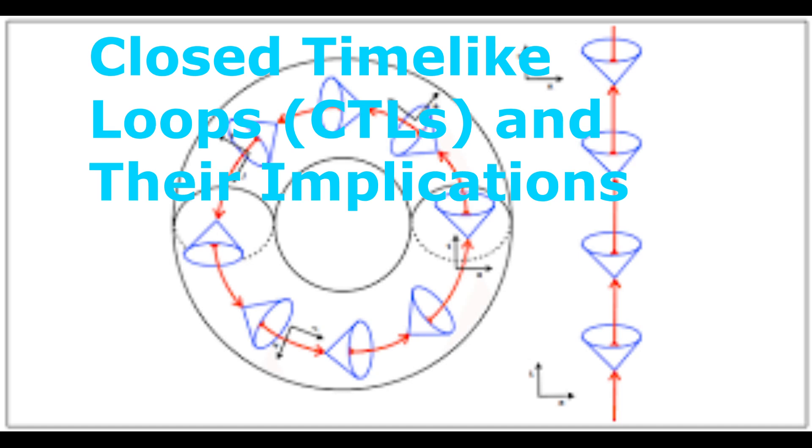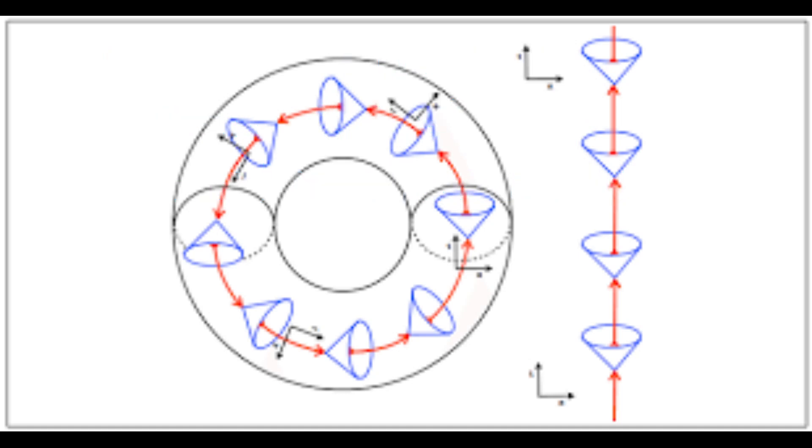Closed time-like loops, CTLs, are solutions to Einstein's field equations in general relativity that allow a particle to travel back into its past.